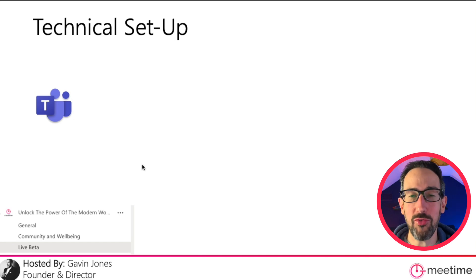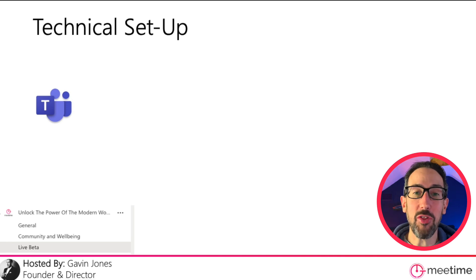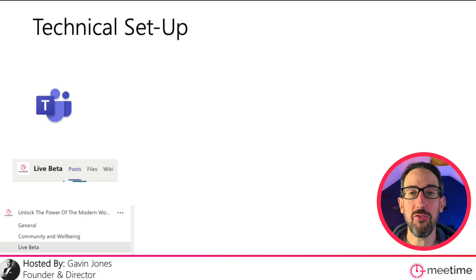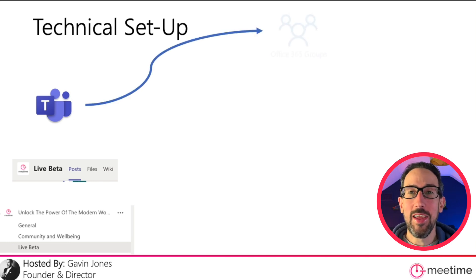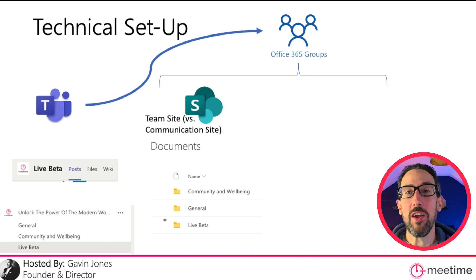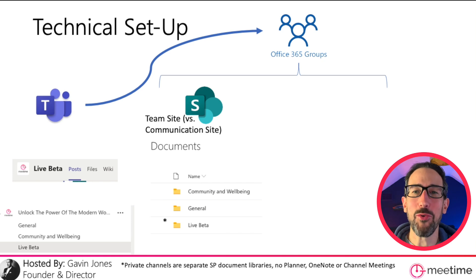A team is everything in the Teams application with a little icon, and everything underneath is a channel. You always get a General channel — which Microsoft has now allowed you to hide, something you couldn't do for a long time — and then you can create any other channels you want. In terms of architecture, when you set the team up, each channel gets a number of tabs: Posts, Files, and a Wiki. A OneNote also gets set up, and in the back end it creates a Microsoft 365 group, which sets up a whole SharePoint team site and a document library.